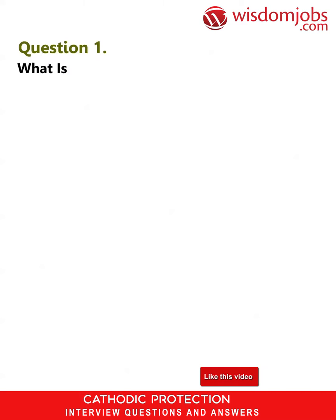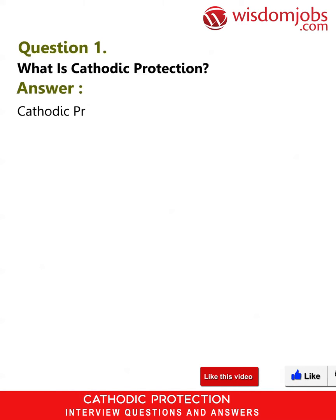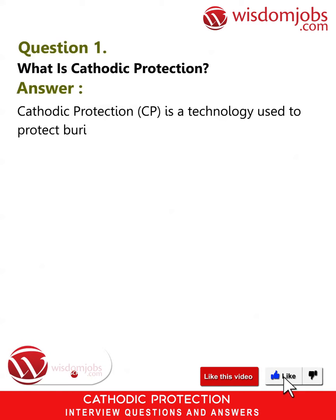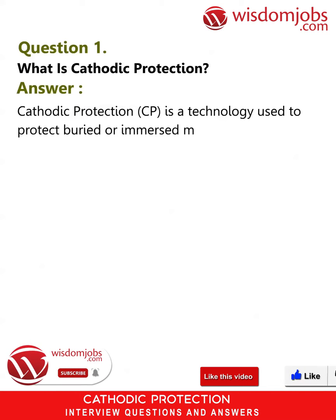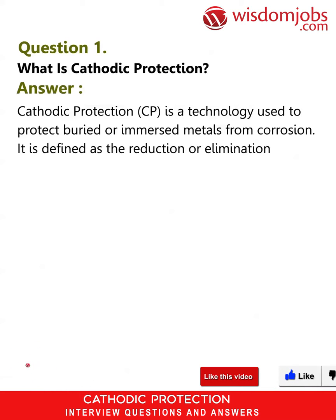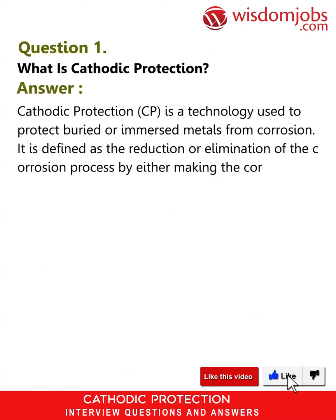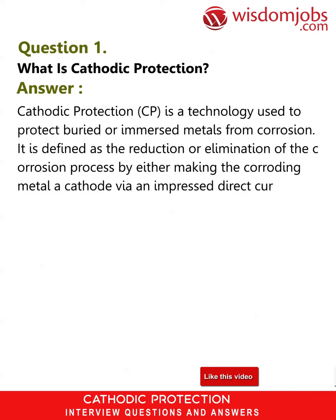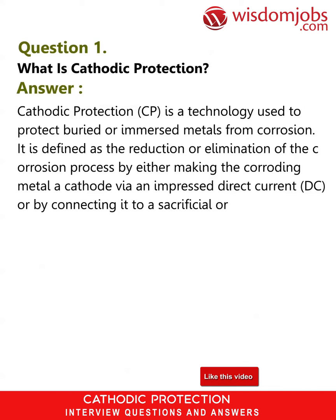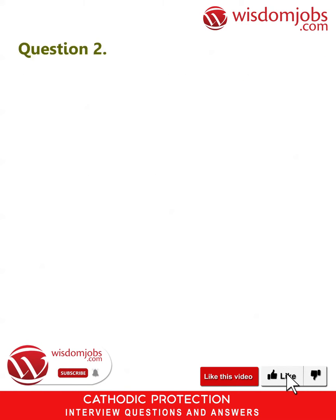Question 1: What is cathodic protection? Answer: Cathodic protection (CP) is a technology used to protect buried or immersed metals from corrosion. It is defined as the reduction or elimination of the corrosion process by either making the corroding metal a cathode via an impressed direct current (DC), or by connecting it to a sacrificial or galvanic anode.